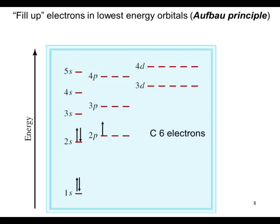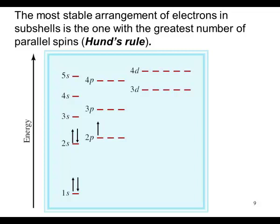Carbon has six electrons. Where is that sixth electron going to go? It follows Hund's rule. The most stable arrangement of electrons in subshells is one with the greatest number of parallel spins. Maximize the number of unpaired electrons.